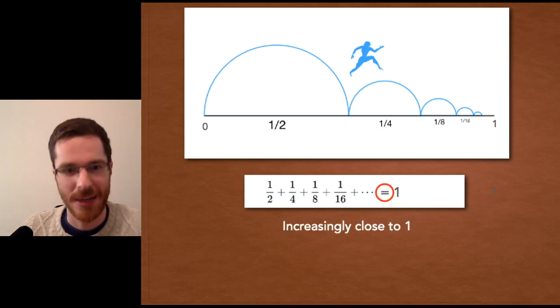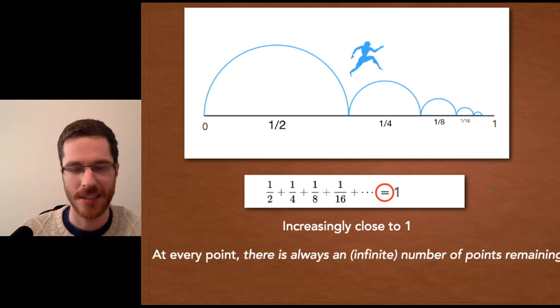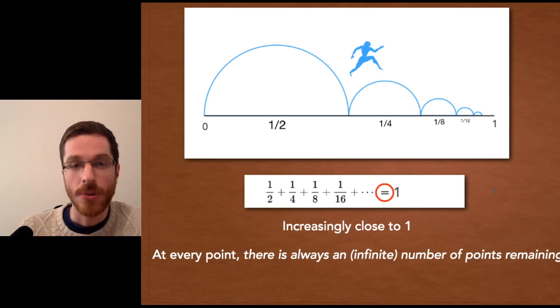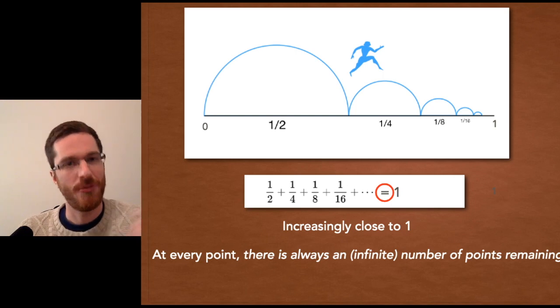Yes, you can describe it as getting increasingly close to one. Another way of putting this is, at every point, according to Zeno, and this way of thinking, there is always an infinite number of points remaining.